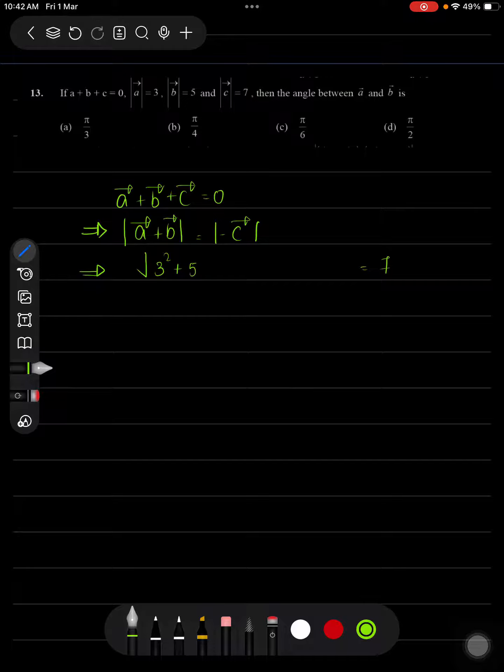which is 3² + b² which is 5² + 2 × 3 × 5 × cos θ. Square on both sides: 9 + 25 which is 34 + 30 cos θ